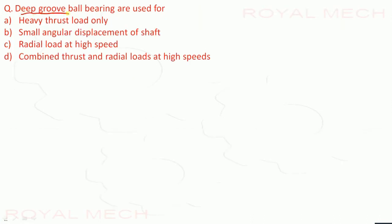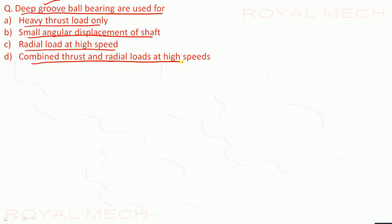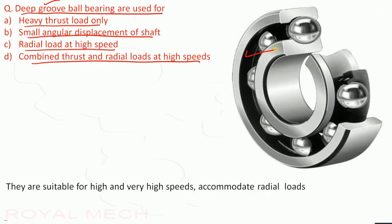Deep groove ball bearings are used for: heavy thrust load only, small angular displacement of shaft, radial load at high speed, or combined thrust and radial loads at high speed. Deep groove ball bearings are suitable for high and very high speeds and accommodate radial loads. Therefore option C is the correct option.